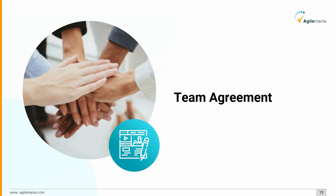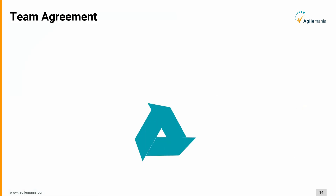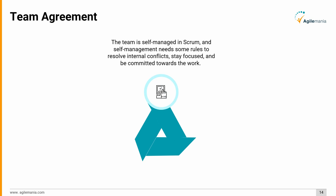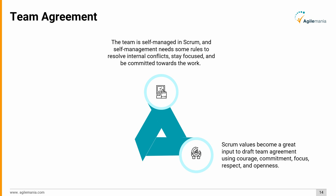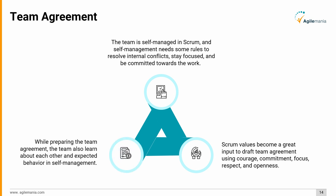Thirdly, team agreement. The team is self-managed in Scrum, and self-management needs some rules to resolve internal conflicts, stay focused, and be committed towards the work. Scrum values become a great input to draft team agreement using courage, commitment, focus, respect, and openness. While preparing the team agreement, the team also learns about each other and expected behavior in self-management.